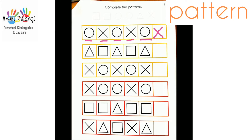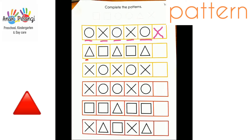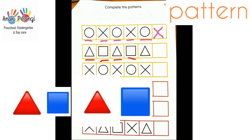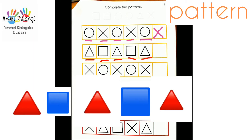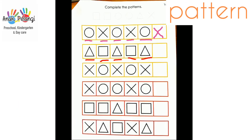Now let's look at the next one. Triangle, cross, circle, cross, circle, cross, circle. What comes next after triangle?